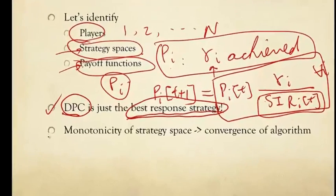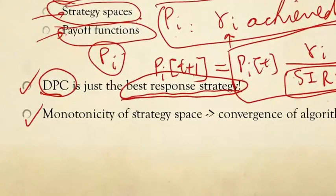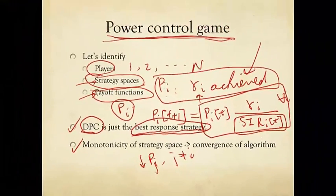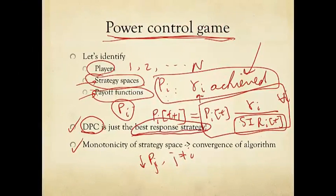The second thing you can check is the monotonicity of the strategy space. What do I mean by that? By that I mean that if all the other users make their powers P_j, j not equal to me (I'm user i), smaller - then my strategy space, the set of P's such that the gammas can be achieved, will be bigger.